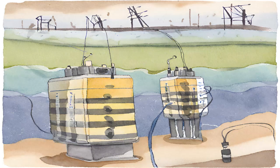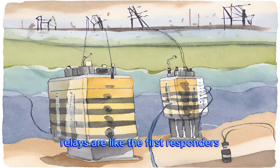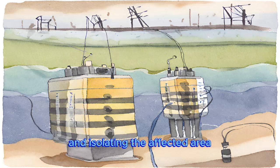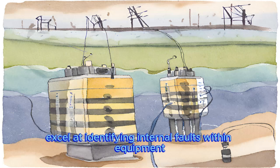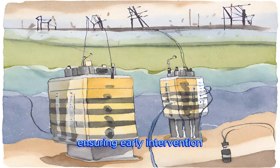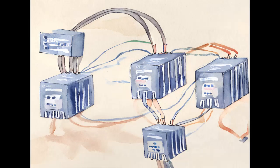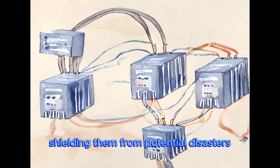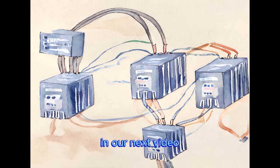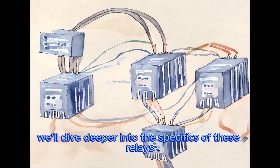Overcurrent relays are like the first responders, detecting abnormal currents and isolating the affected area. Differential relays, on the other hand, excel at identifying internal faults within equipment, ensuring early intervention. In conclusion, protection relays are the backbone of our power systems, shielding them from potential disasters.